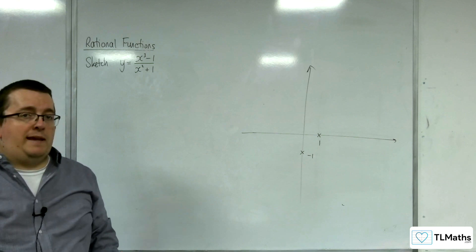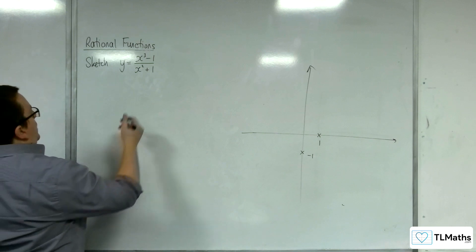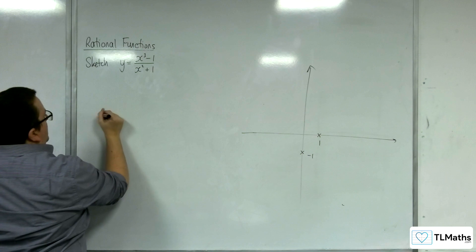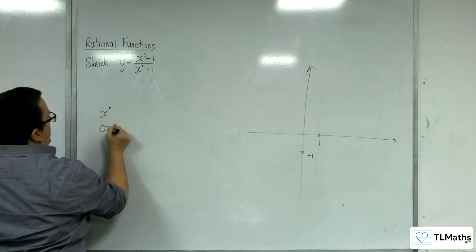How about the oblique asymptote? We'll divide the numerator by the denominator, so x squared, 0x, and 1.